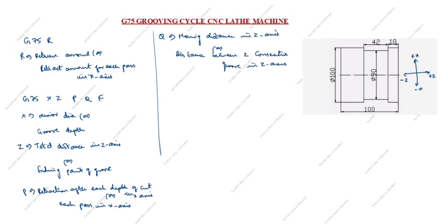You can see here the moving distance in the Z axis. This movement distance is what we give for the Q value. What is F? F is the feed rate.